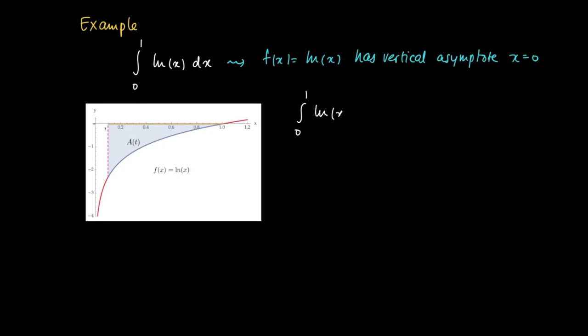So if we try to calculate the integral from 0 to 1 ln x dx, we should take a limit. We should be worried about the left-hand side of the interval. So the limit for t to 0 plus of the integral t to 1 ln x dx.